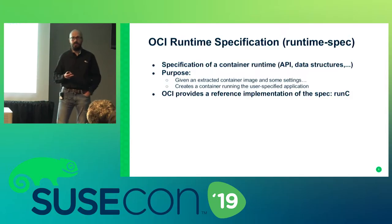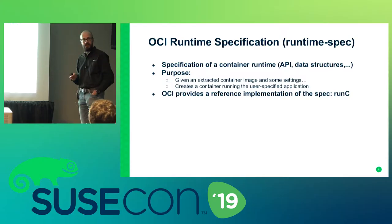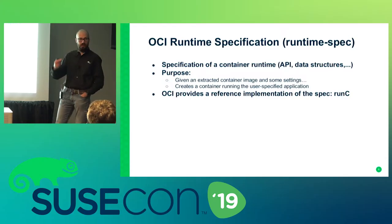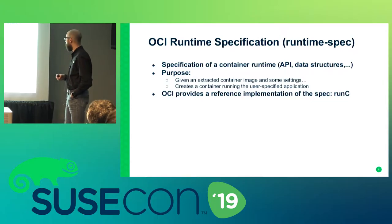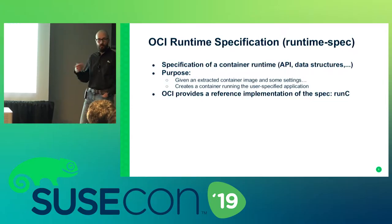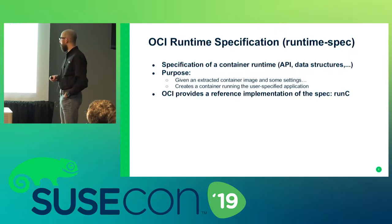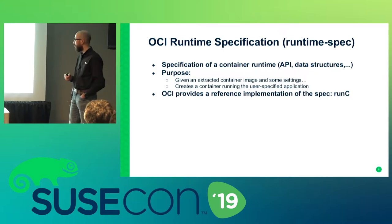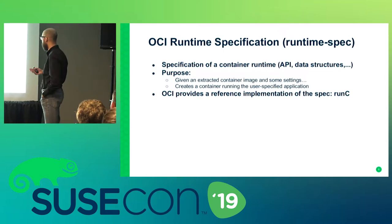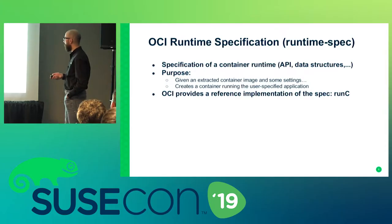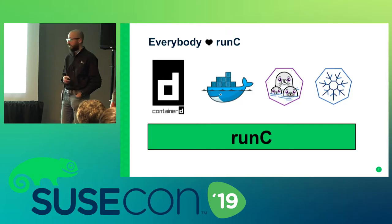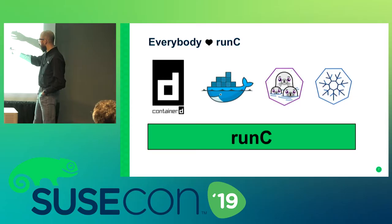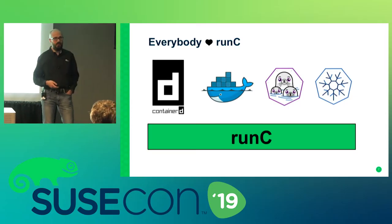OCI also came up with a reference implementation called RunC. If you are using Docker, underneath you are using RunC — because Docker calls Containerd and Containerd calls RunC. Podman uses RunC as well, and CRI-O, which is a container runtime for Kubernetes, uses RunC too. So thanks to this standardization, Containerd, Docker, Podman, and CRI-O all rely on top of RunC.